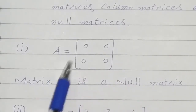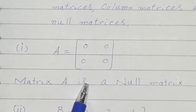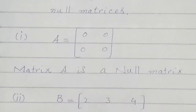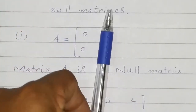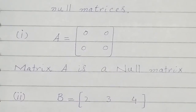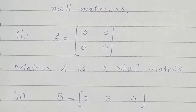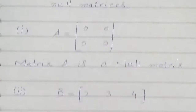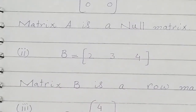Matrix A: a matrix whose all entries are zero is called the null matrix. It has two rows and two columns, so you can describe it as a null matrix of order two. Here is another matrix, matrix B.